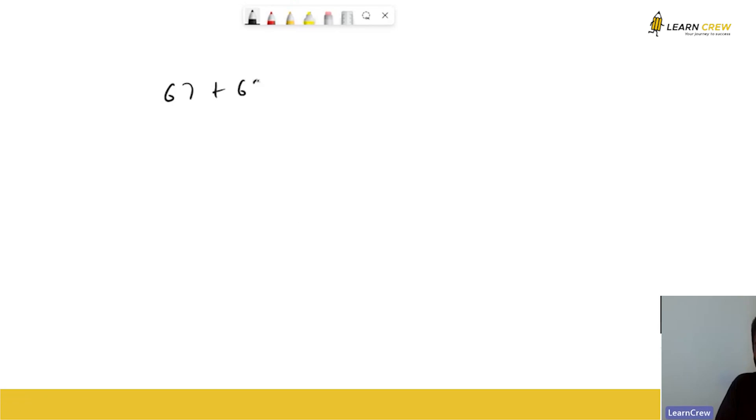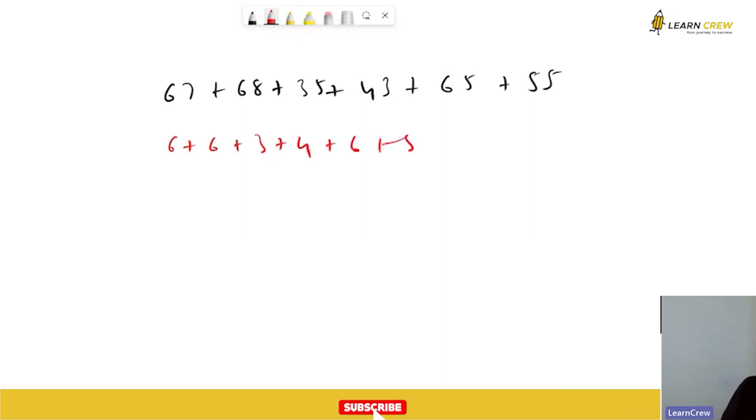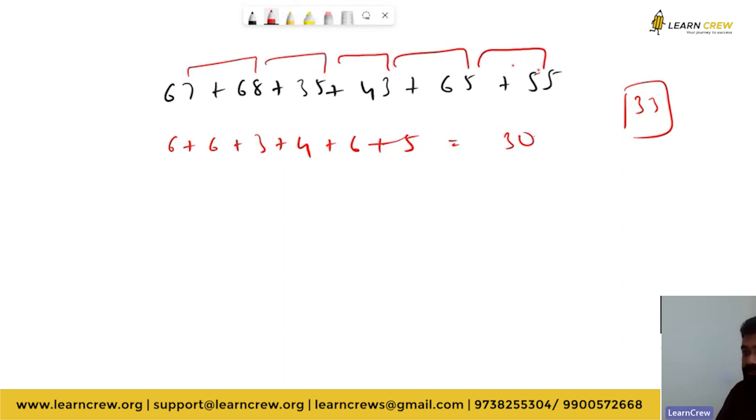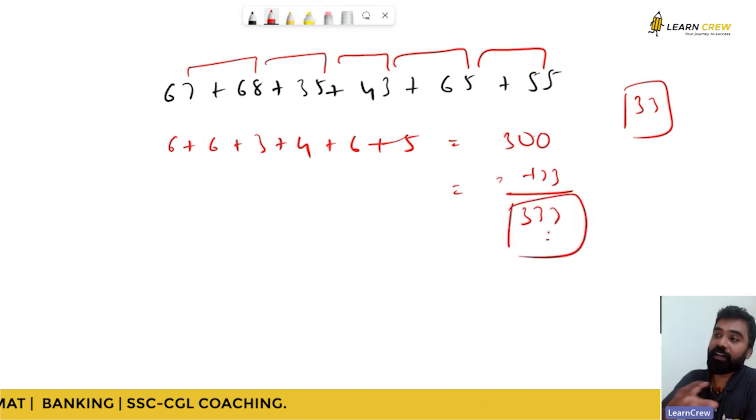67 plus 58 plus 68 plus 35 plus 43 plus 65 plus 55. How do you do it? First add all the digits in the tens place: 6 plus 6 plus 6 plus 3 plus 4 plus 6 plus 5 equals what? 6 plus 6 is 12, 15, 19, 25, 30. Add all the ones place, coming to 33. The answer is 333. You can add an initial zero and make it 33. Whenever you get long digits to add, just add all the units place, add all the tens place, add all the hundreds place separately. Add them all together.